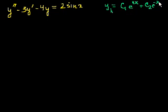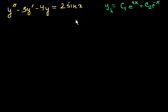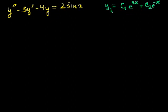In order to get the general solution of the non-homogeneous equation, I take the homogeneous solution and add to it a particular solution that satisfies the original equation — meaning when I take the second derivative minus 3 times the first minus 4 times the function, I actually get 2 sine of x. Here, once again, we'll use undetermined coefficients.